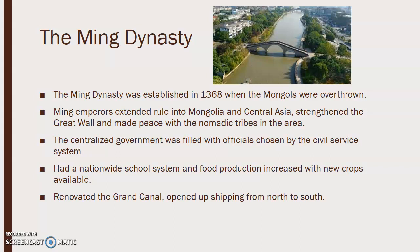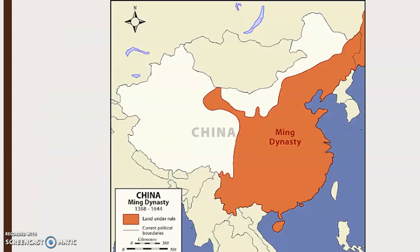They had a nationwide school system and increased food production with new crops available. They would renovate the Grand Canal, which would open up shipping from north to south. The map here is basically showing you what modern China is, and then in the orange is what the Ming dynasty encompassed.